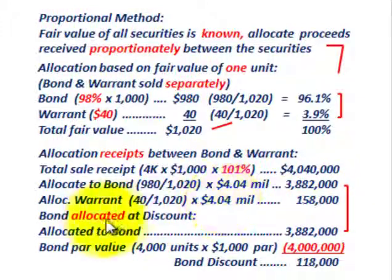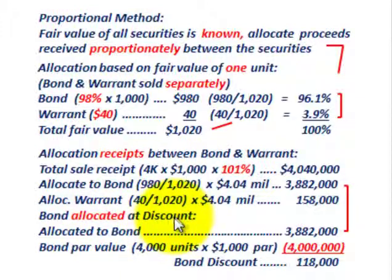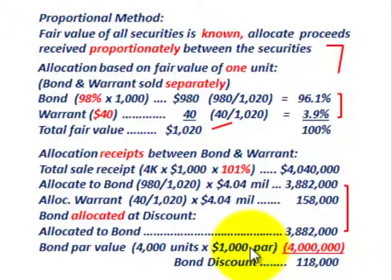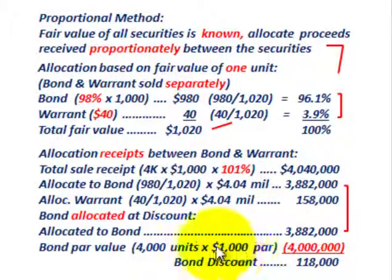We also have to determine any bond premium or discount, which must also be allocated. In this case, we're going to have a discount. The allocated bond amount of $3,882,000 is less than the total bond par value of $4,000,000 — that's 4,000 units times $1,000 par. The difference gives us a bond discount of $118,000.